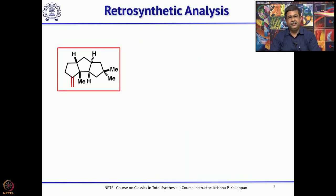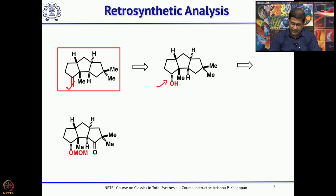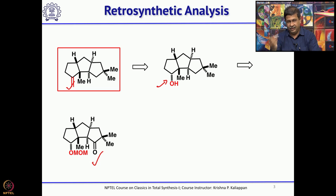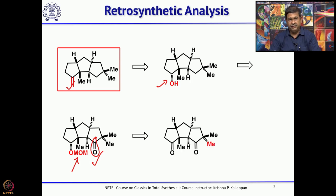Let us see how he did a retrosynthesis of hirsutene. When you have a double bond, it can be obtained from an alcohol via oxidation and Wittig reaction, and this can be obtained from a keto intermediate. You can remove the carbonyl group in 2 to 3 steps, and at the same time remove the MOM group to get the hydroxyl, and this can be obtained from the diketone.